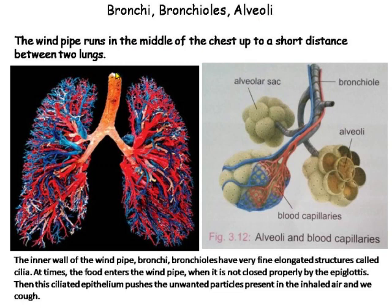The windpipe runs in the middle of the chest up to a short distance between the two lungs. After that it gets divided into two bronchi. These two bronchi get divided and subdivided into bronchioles.